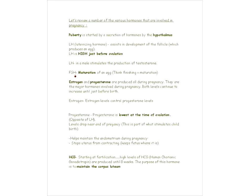The next hormone is FSH — Follicle Stimulating Hormone. If you connect F with the word 'finishing,' finishing is like maturation: FSH causes the maturation of the egg. The other two hormones are estrogen and progesterone. They continue to rise during pregnancy, but just before birth they decrease. When you think about pregnancy, these are two of the major hormones involved, and estrogen actually controls progesterone levels.